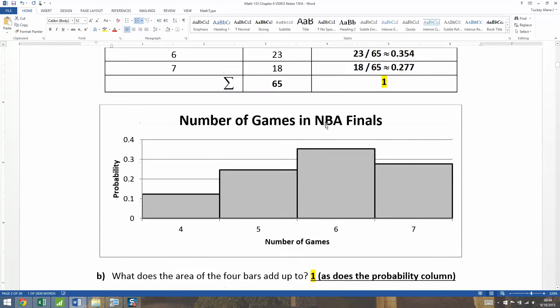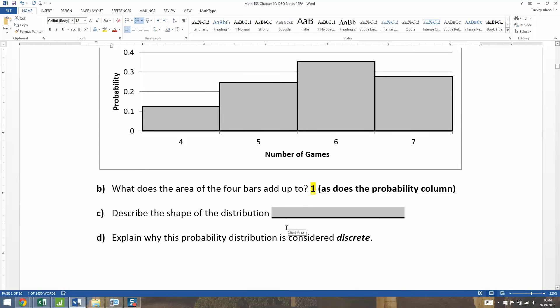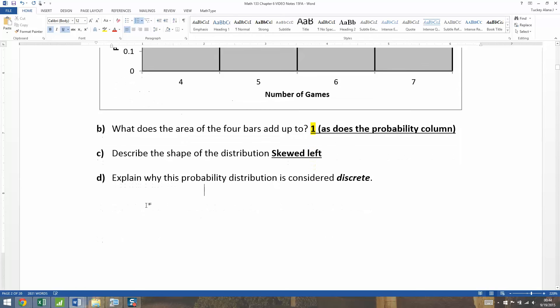The shape of this distribution is skewed left. It's skewed left because it has this tail. If five, six, and seven were the only options you'd be okay, but it's the four down there off to the left.